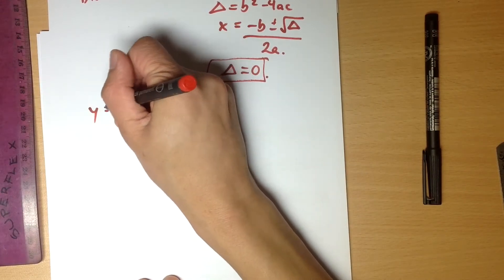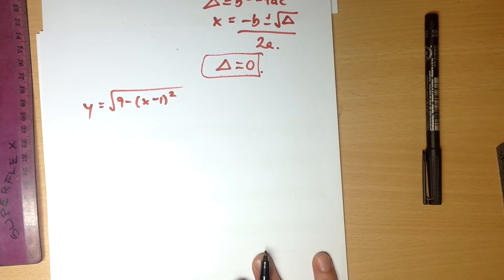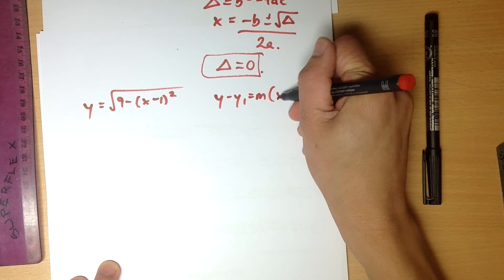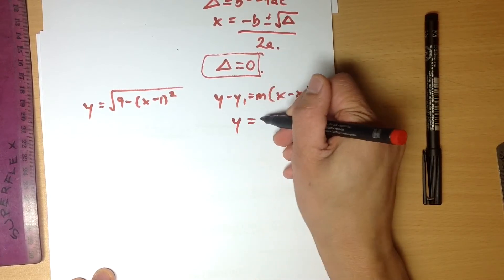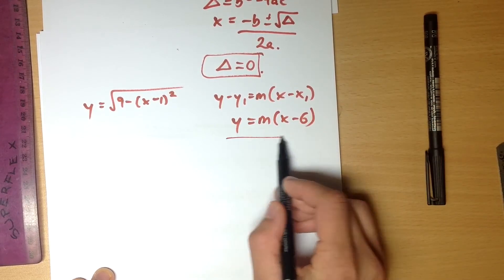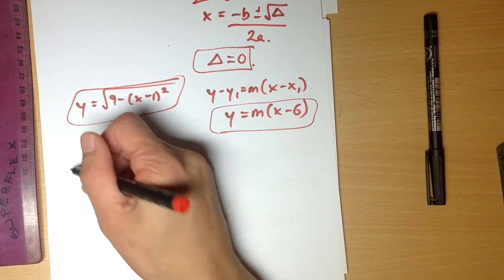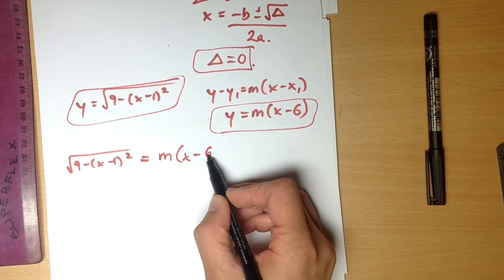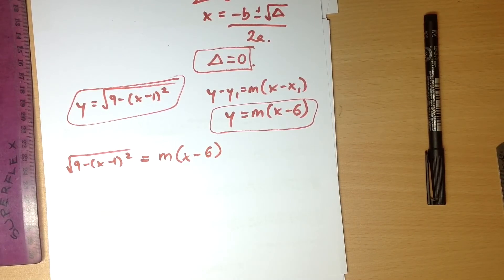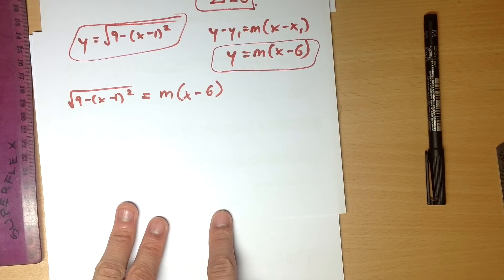So I want to solve simultaneously the semicircle equation and the tangent equation. The tangent passes through (6, 0) so it's in the form y = m(x − 6). I'll substitute into the semicircle equation and square both sides. Squaring both sides adds an extra solution, which we'll need to remove later. After expanding, I need to rearrange everything into general quadratic form ax² + bx + c = 0, so I can identify a, b, and c and compute the discriminant.